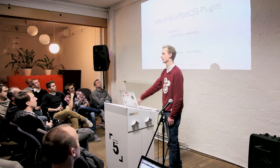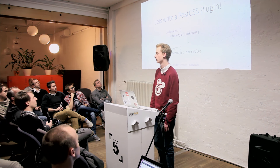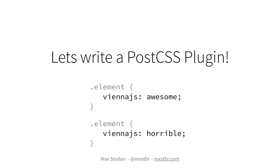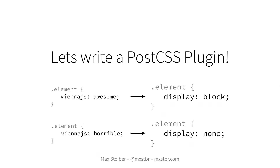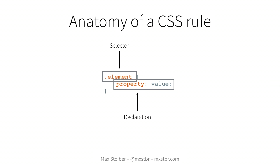Since this is the Vienna JS meetup, I wanted to show you how to write a PostCSS plugin in JavaScript. Our plugin is going to turn these selectors into these ones. Vienna JS awesome will be turned into display block, and Vienna JS horrible will be turned into display none. That's a selector and that's a declaration — a declaration has a property and a value.